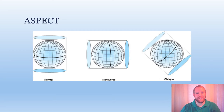A transverse aspect is rotated 90 degrees so that it's perpendicular to the earth's axis. Finally, an oblique aspect is anywhere between the other two.